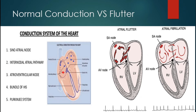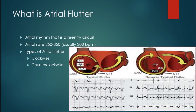So what exactly is atrial flutter? Atrial flutter is an atrial rhythm with an atrial rate usually of 250 to 300 beats per minute. Just because the atrial rate is going that fast doesn't mean the ventricular rate is going that fast. This is a re-entry circuit, and there are different types — clockwise and counterclockwise — based on which direction the impulses travel.